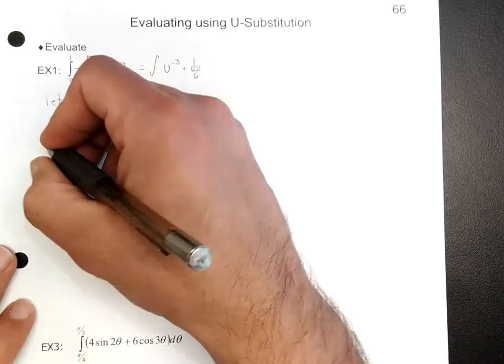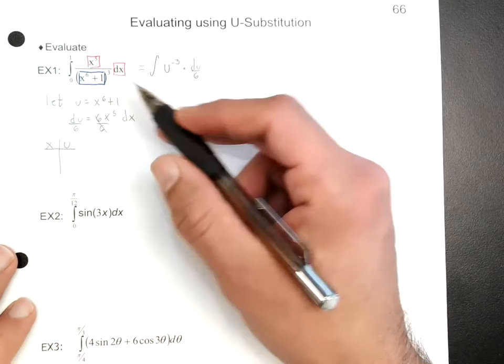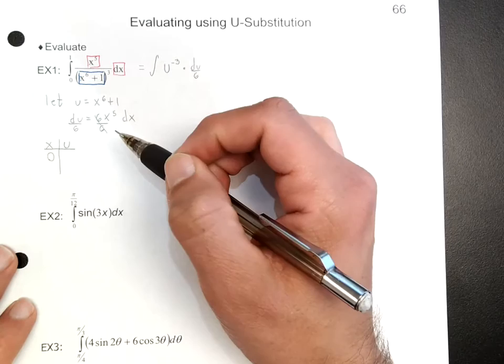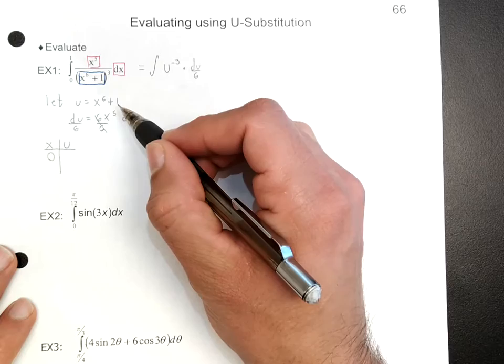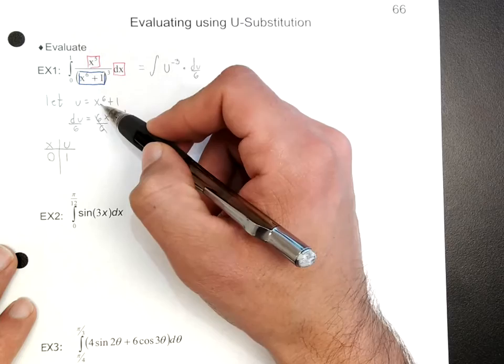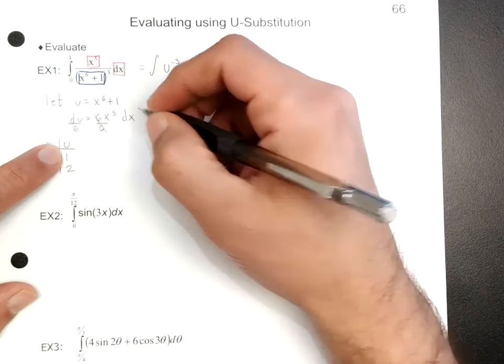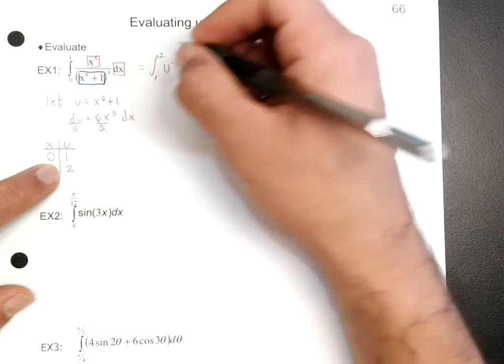There's a relation between x and u defined by our substitution. The lower boundary: if x is 0, I plug in 0, so 0 to the 6th power plus 1 is still 1, so u equals 1. And if x equals 1, I have 1 to the 6th which is 1, plus 1 is 2 — so u equals 2. My boundaries now change: the lower boundary is 1 and the upper boundary is 2.